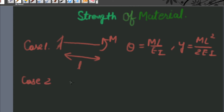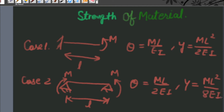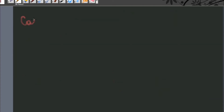Case number two: when a simply supported beam of length L is subjected to a bending moment M at both ends, then the angle of twist theta is given by ML upon 2EI, and deflection Y is given by ML squared upon 8EI.